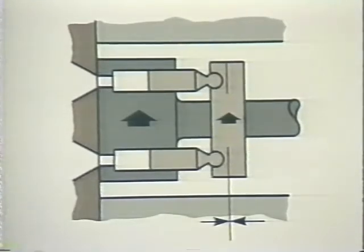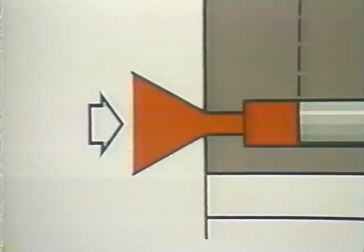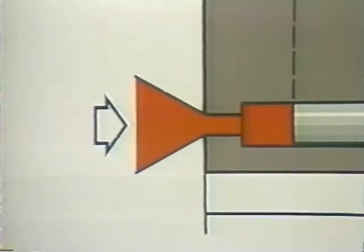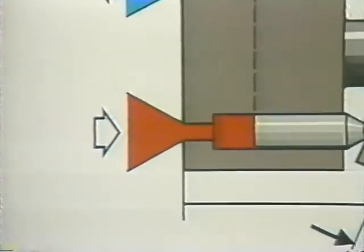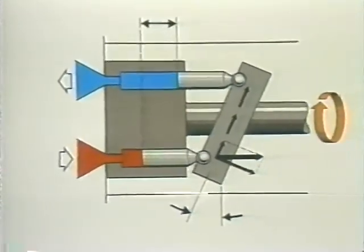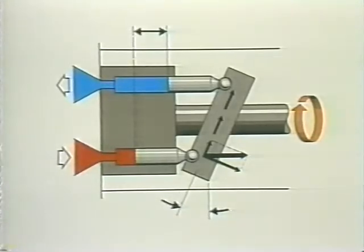Crossing the center with the swash plate would again start the pistons moving, but in the opposite direction, and flow from the pump would be reversed. A piston motor is almost identical in construction to a pump. The operation, however, is quite different. In a pump, the shaft drives the cylinder block, causing the pistons to move in and out of their bores, taking in and then discharging fluid.